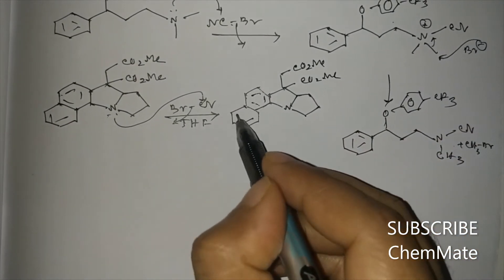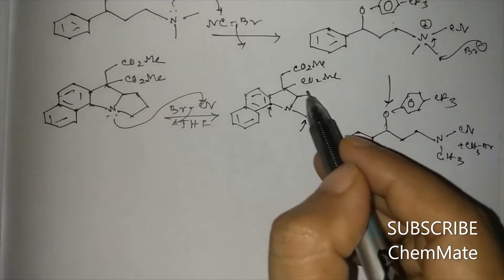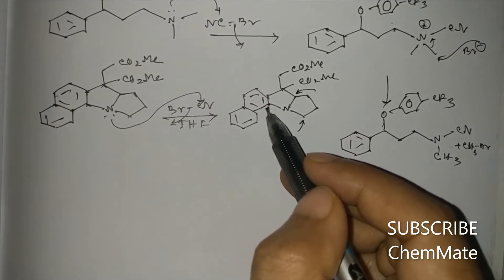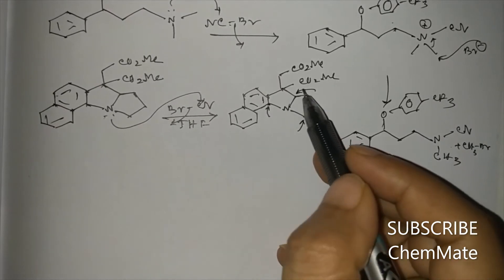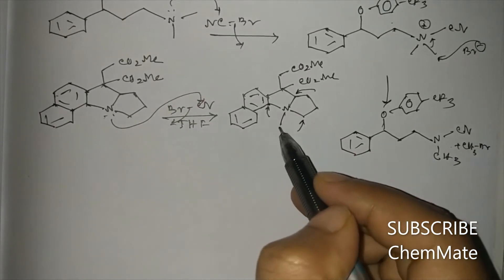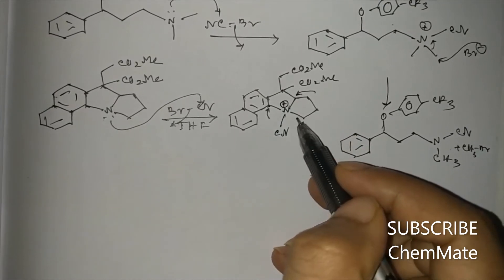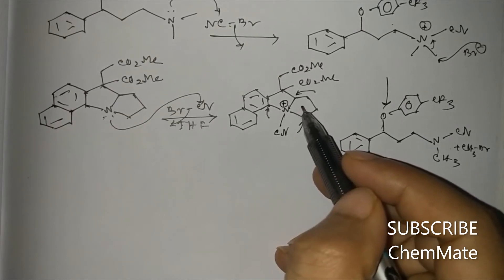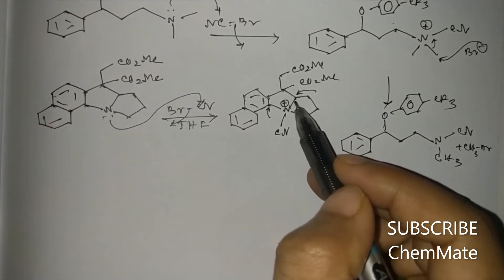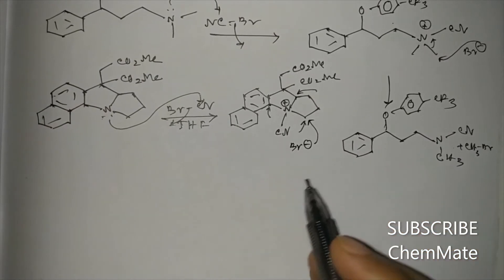Three non-equivalent centers are present. At one sp2 hybridized carbon, nucleophilic substitution generally will not occur, so two options remain. Between those two, we check where the positive charge is more stable. If the bond to the carbon bearing two electron-withdrawing ester groups cleaves, the positive charge there will be less stable. So only the other bond will cleave, and Br minus will preferentially attack that carbon.